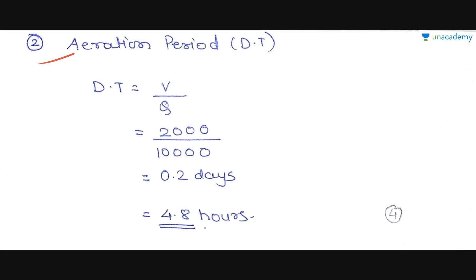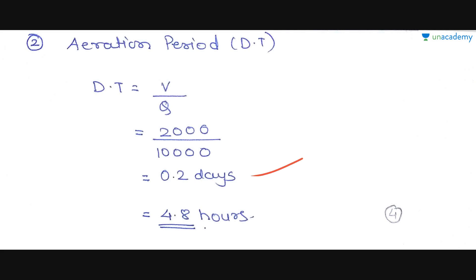Next, we find the aeration period, also known as hydraulic retention time (HRT). Its formula is HRT = V/Q. V is 2000 m³ and Q is 10,000 m³/day. So 2000 divided by 10,000 gives 0.2 days. Converting to hours by multiplying by 24, we get 4.8 hours. So the detention time or aeration period is 4.8 hours.